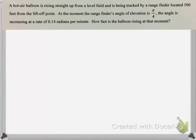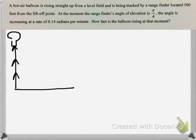A hot air balloon is rising straight up from a level field and is being tracked by a rangefinder located 500 feet from the liftoff point. So here we have the ground and our hot air balloon is rising straight up. The horizontal distance to the rangefinder is 500 feet, and that distance is not changing — the rangefinder is not moving. So that's a constant in this problem.